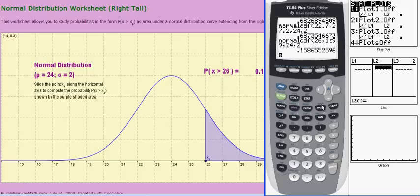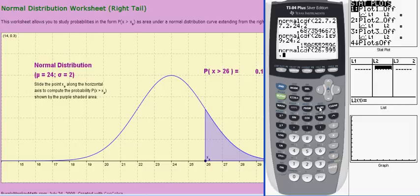What would also work in this case, and a value I use quite often, is 999 to indicate a value way out in the right tail. So let me show you what you get if you put that in, and you get the same probability.